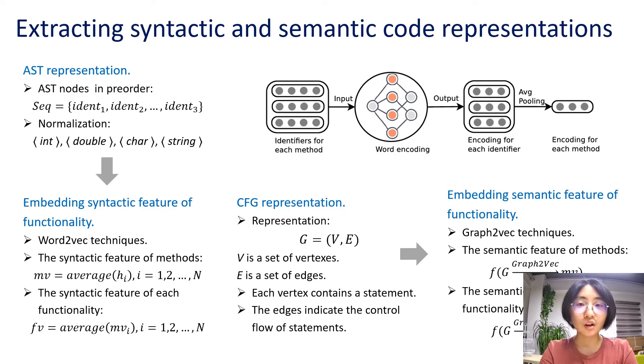After identifying the functionality of the source code, we extract the AST as syntactic representation and the CFG as semantic representation. We first extract the AST of each method and obtain the corresponding identifier sequence by traversing the AST tree in pre-order. Meanwhile, since the variable names can have an effect on functional clone detection, we normalize the identifier sequence by replacing variables by its type such as int, double, char and string. Then we apply word2vec, a word embedding technique on each identifier. The syntactic feature of each method is the average of the identifier's vector. And the syntactic feature of each functionality is the average of the method's vector.